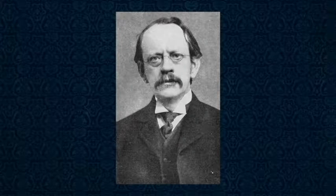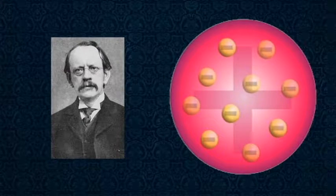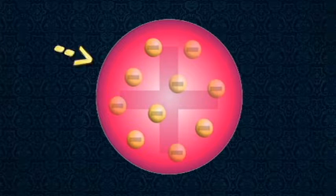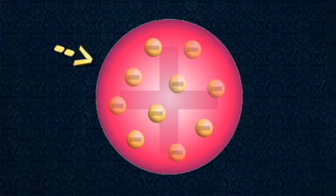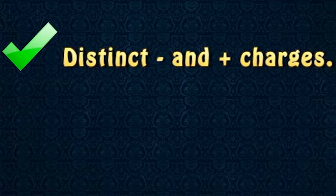In 1904, scientist J.J. Thompson created the familiar rudimentary plum pudding model of the atom. Here, the electrons are situated in a mass of positive charge resembling plums and pudding, hence the moniker. This model was able to accurately predict that the atom was comprised of distinct negative and positive charges, but failed to predict the structure of the atomic nucleus.